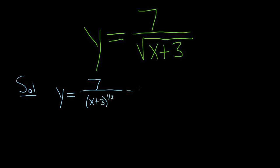And now we can bring it upstairs. So this is 7 and then parentheses x plus 3 to the negative 1 half. And again, this is a really good strategy whenever you have a number up top and a fraction.